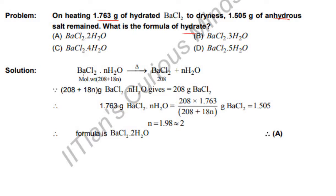Move on to the solution. Now you can see hydrated BaCl2 here, there will be some amount of H2O present. So BaCl2·nH2O on heating gives this anhydrous salt, BaCl2 plus n times H2O.